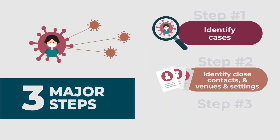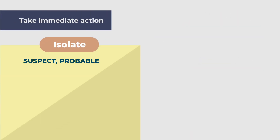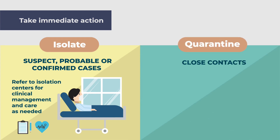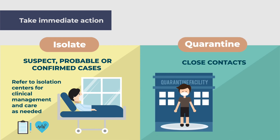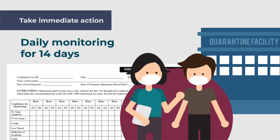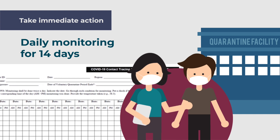Step 3: Take immediate action. We immediately isolate suspect, probable, or confirmed cases in designated isolation centers for 14 days or until they turn out negative on repeat test. We monitor their condition and provide care as needed. We quarantine all close contacts without symptoms, ideally in community quarantine centers. We monitor their health condition and provide management and care as needed. Daily follow-up for 14 days should be conducted with all close contacts to monitor for signs and symptoms.